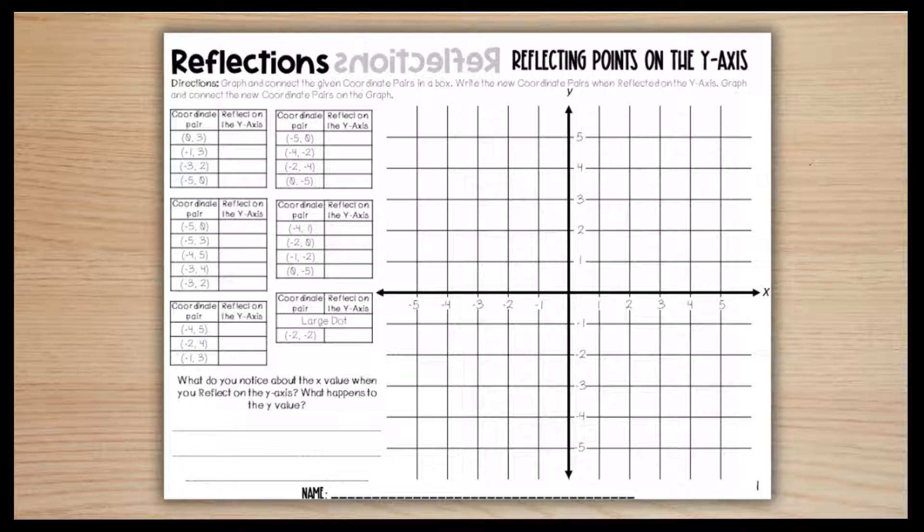We're going to look at page one for this example. Students will begin in the top left box graphing and connecting the points of all the given coordinate pairs, reading them vertically up and down.